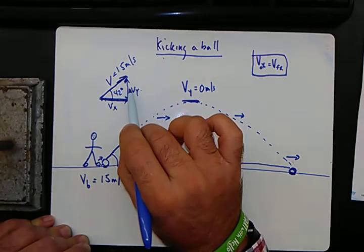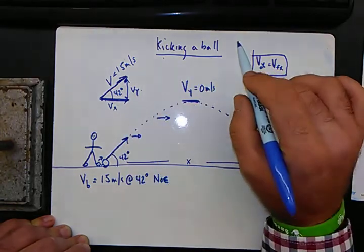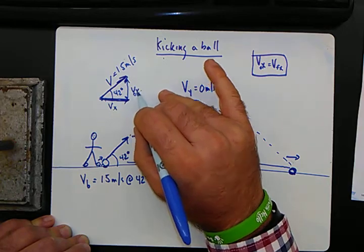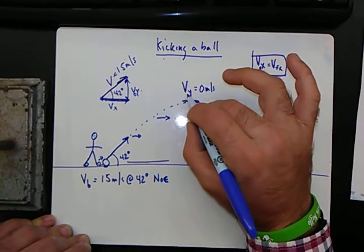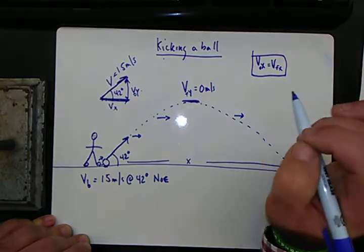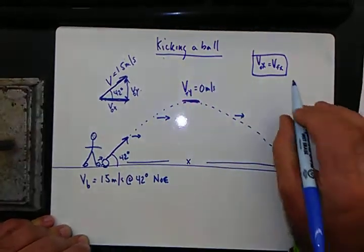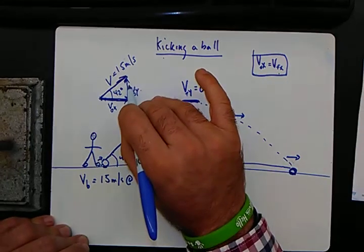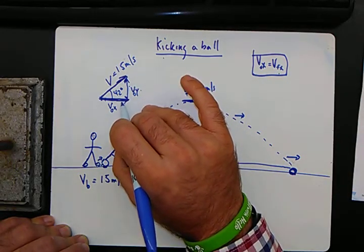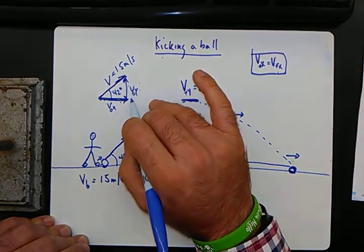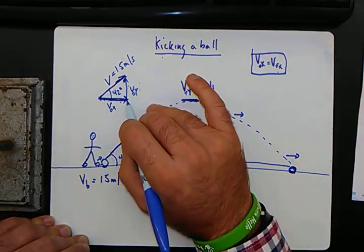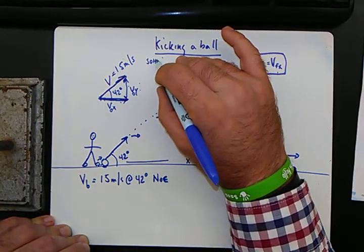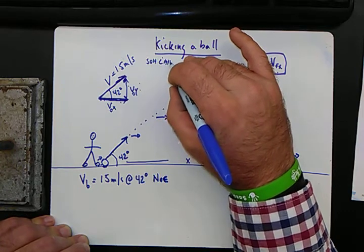Very simply. So velocity in the y direction, V sub y, we'll call it V naught sub y. That's the initial velocity in the y direction. We'll call this Vf sub y. V naught sub x is the same as the V final sub x. So we need to find this velocity, we need to find this velocity, because this has a bit of x and y. So we remember our old pal SOH CAH TOA.